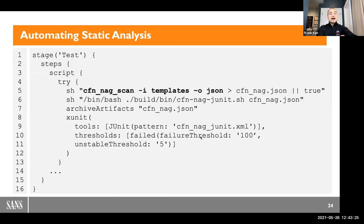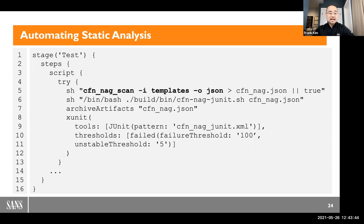How do you go about automating static analysis? Here's a snippet of code from a Jenkinsfile. We've manually run CFN-NAG a number of times, but as a best practice, we want our automation to run this for us. This is how you integrate it into your automated pipeline so that every time a build runs, the CFN-NAG scan also runs.